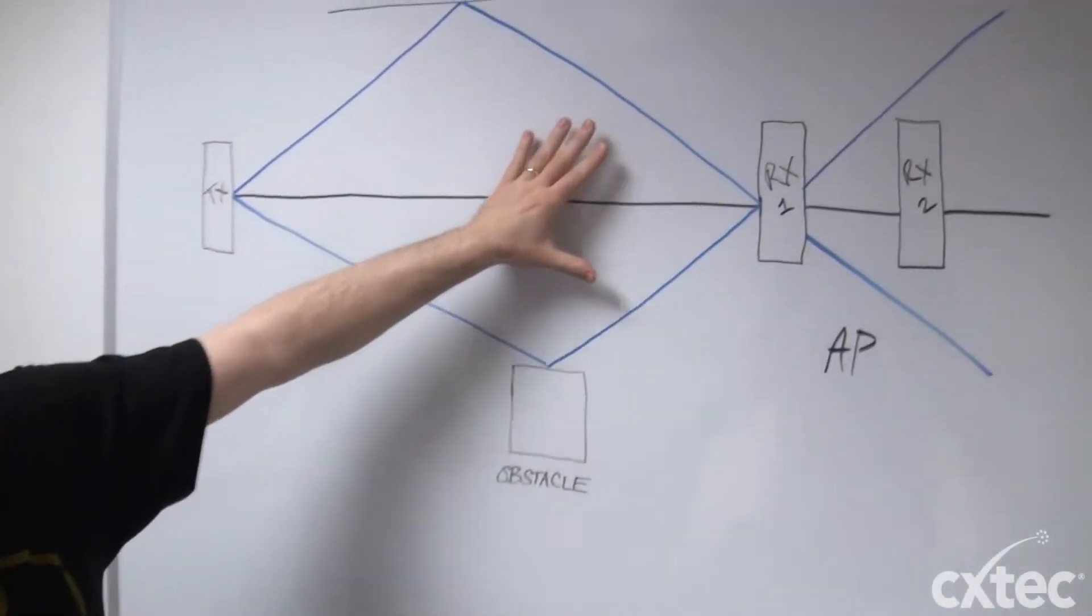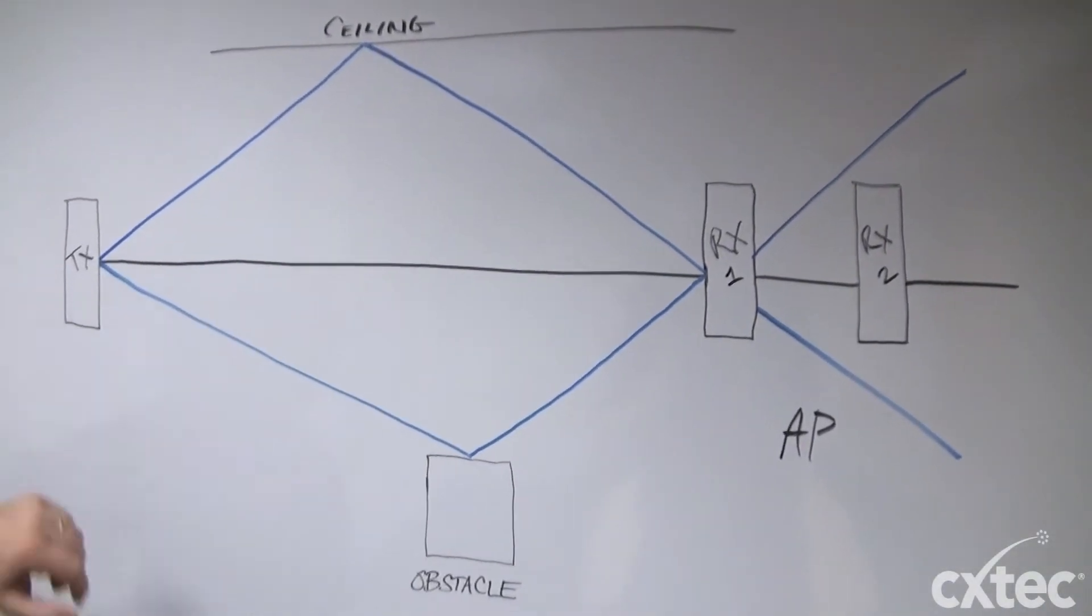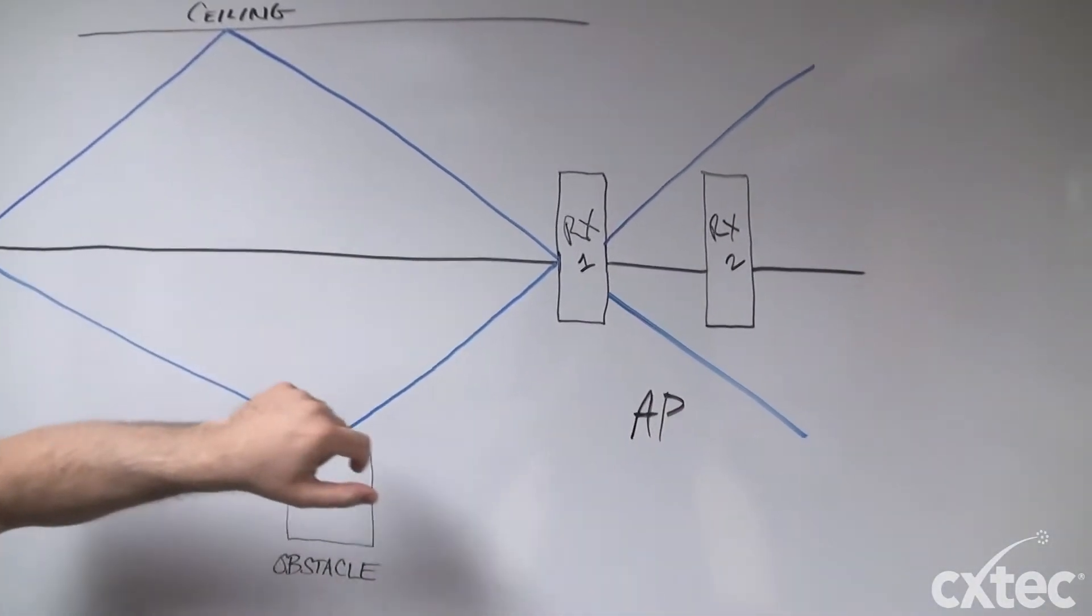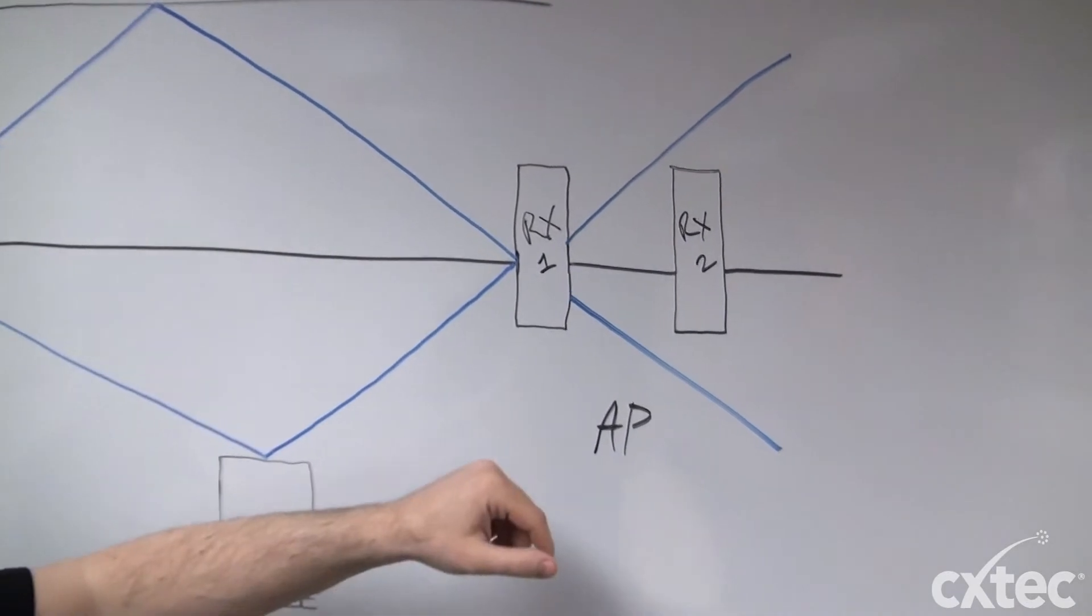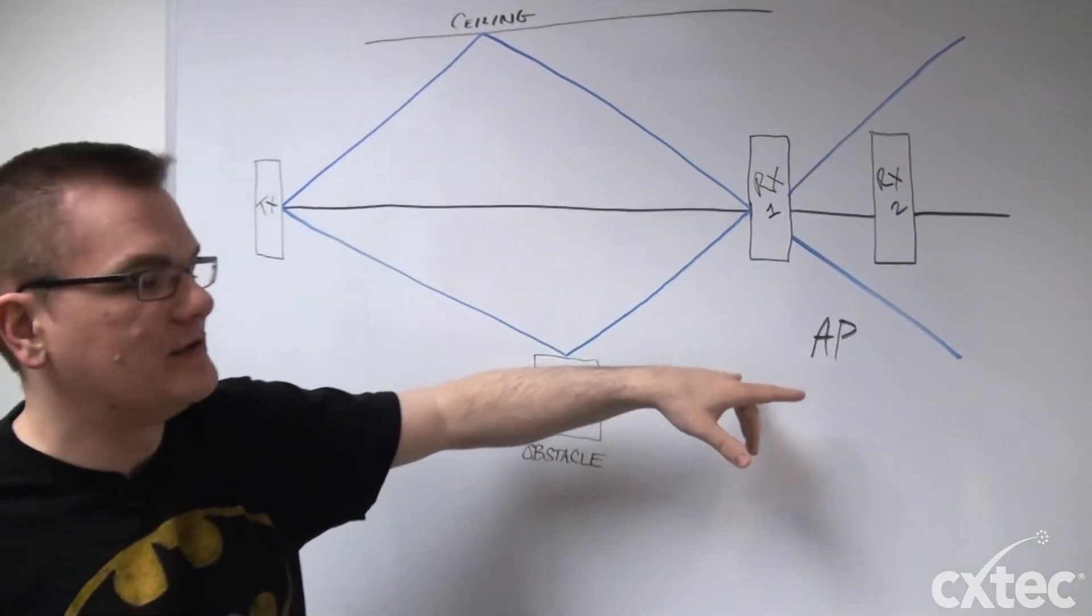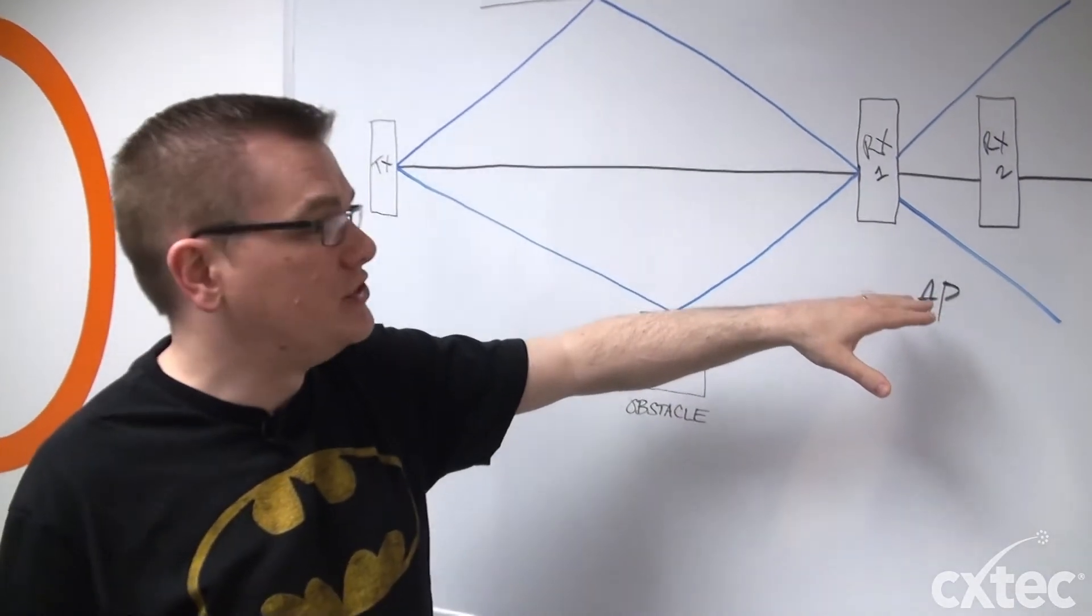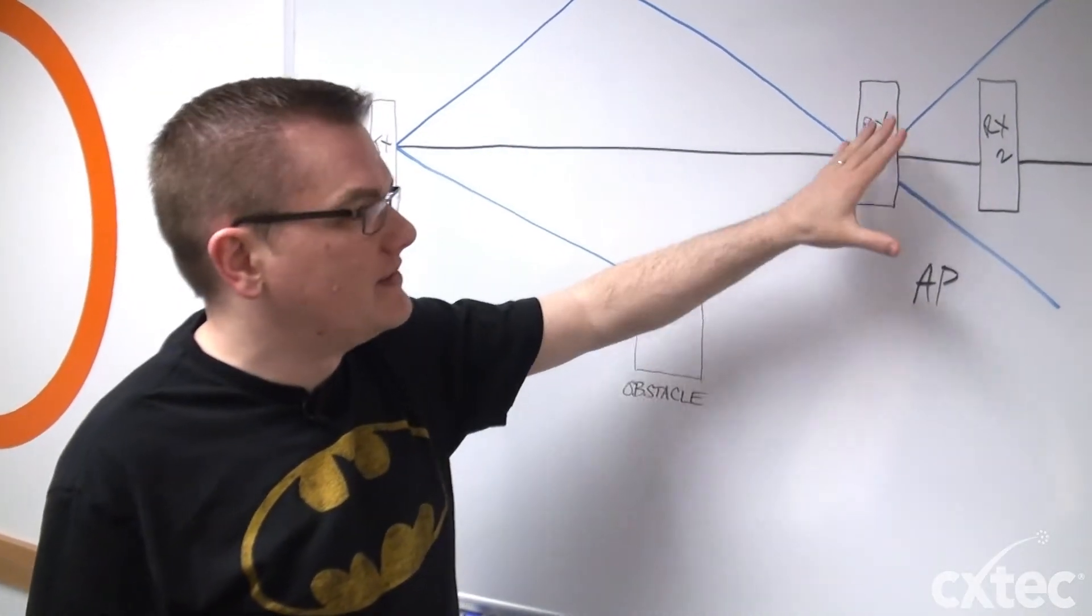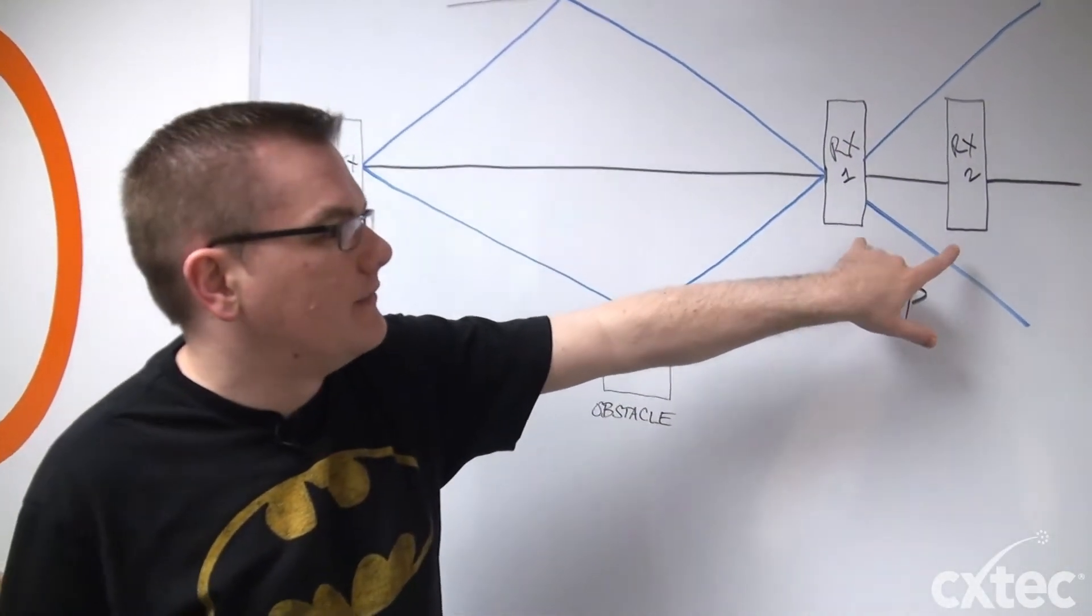In a perfect environment, what you want to do is have more than one antenna, which is why there could be two antennas on, say, a Cisco 1242, where you'd have two antennas for the A radio and two for the G radio. Let's assume this is a G radio scenario, so you have your two antennas.